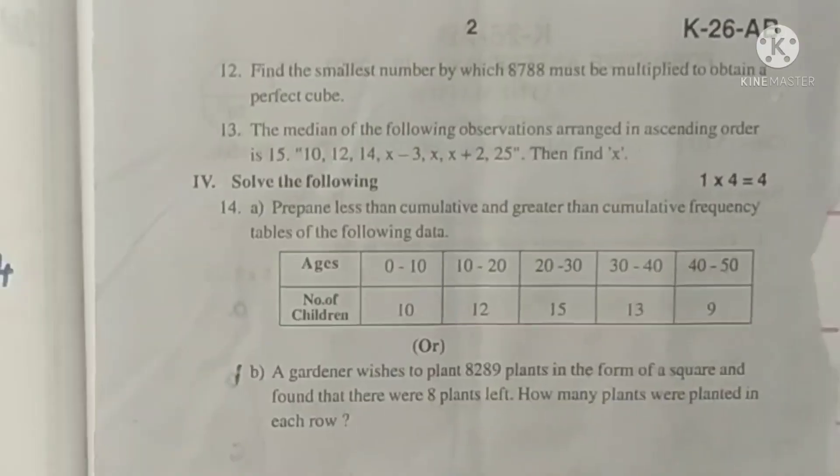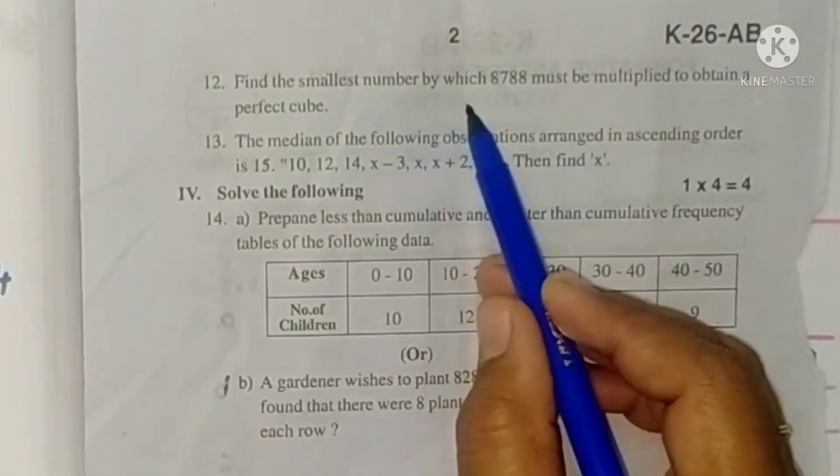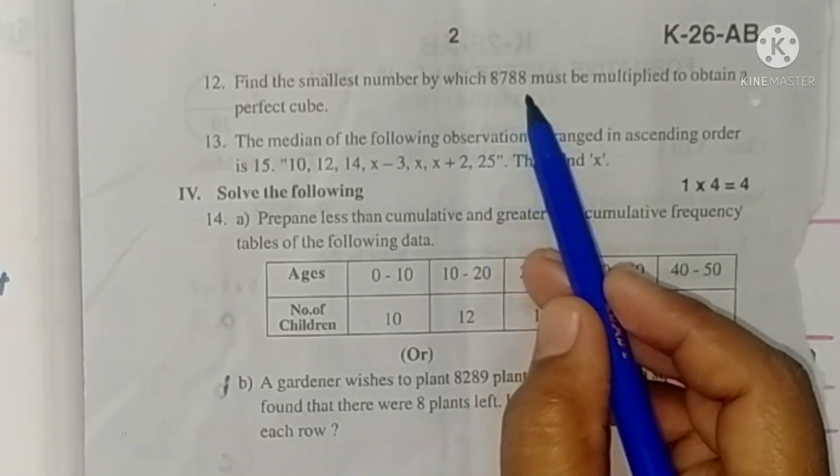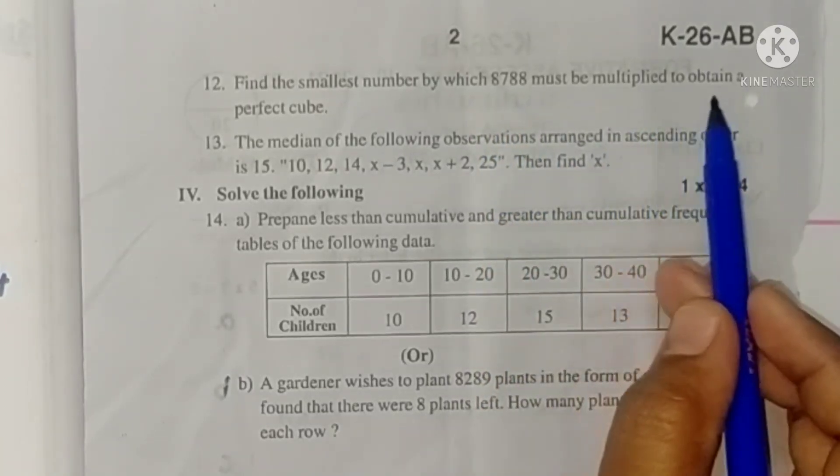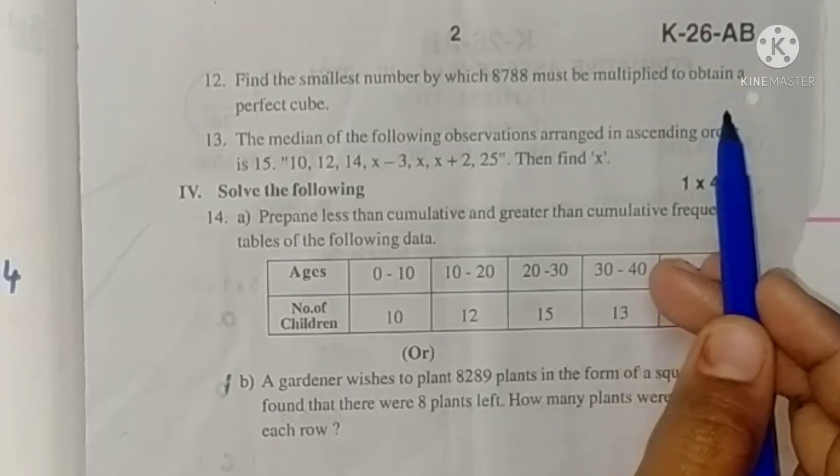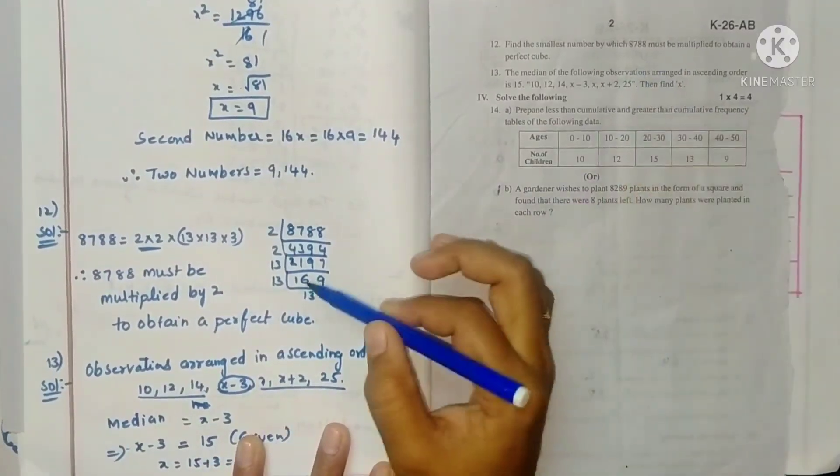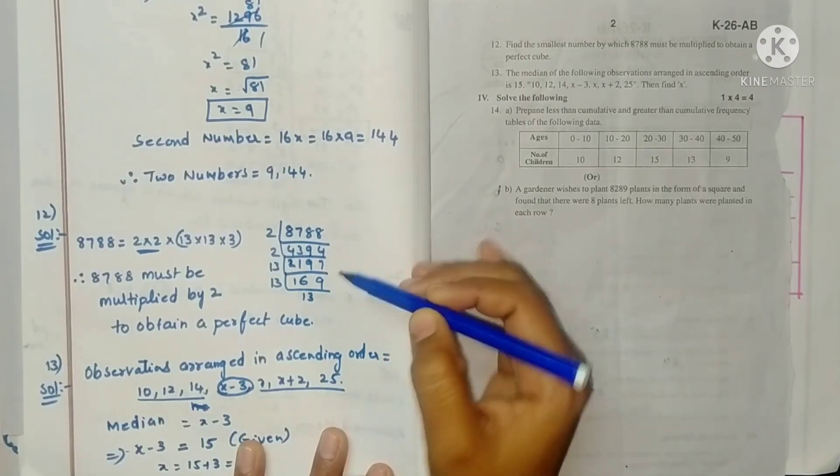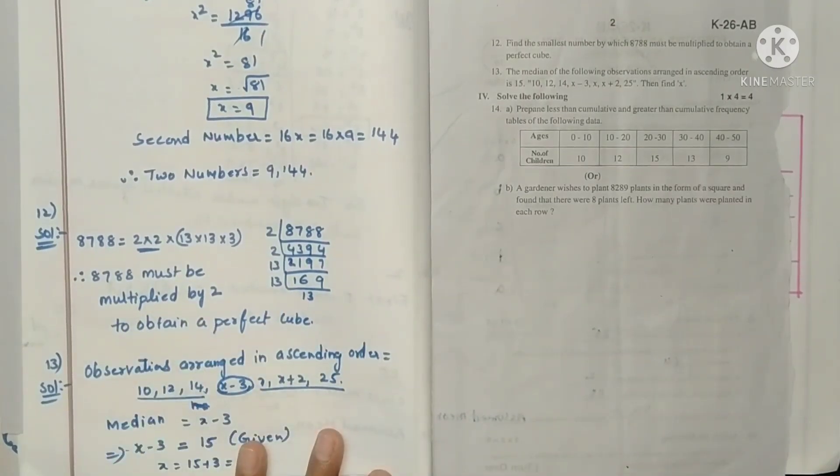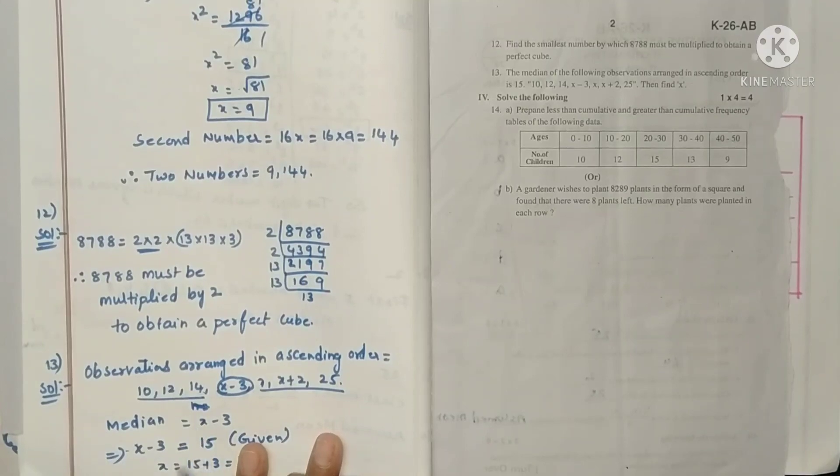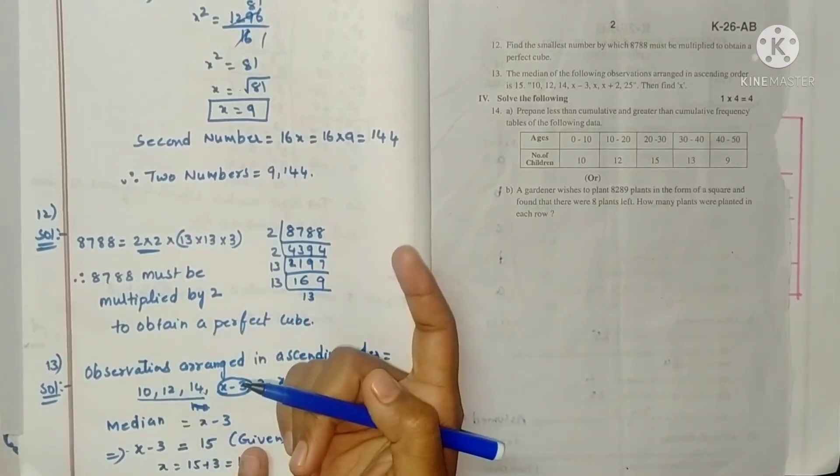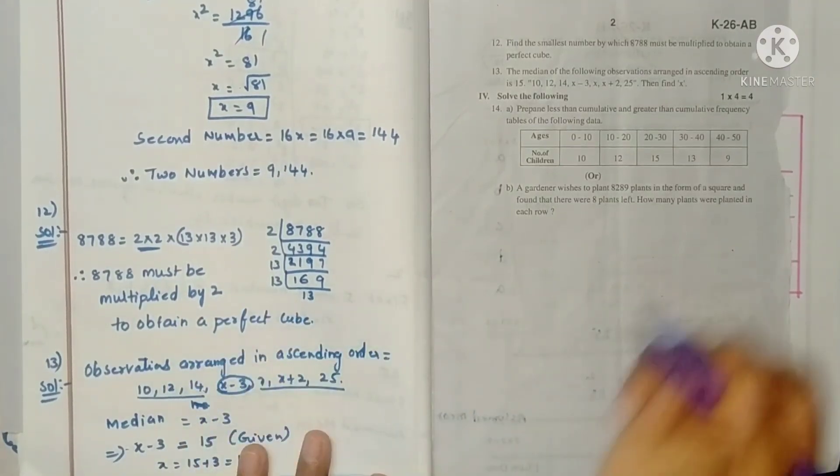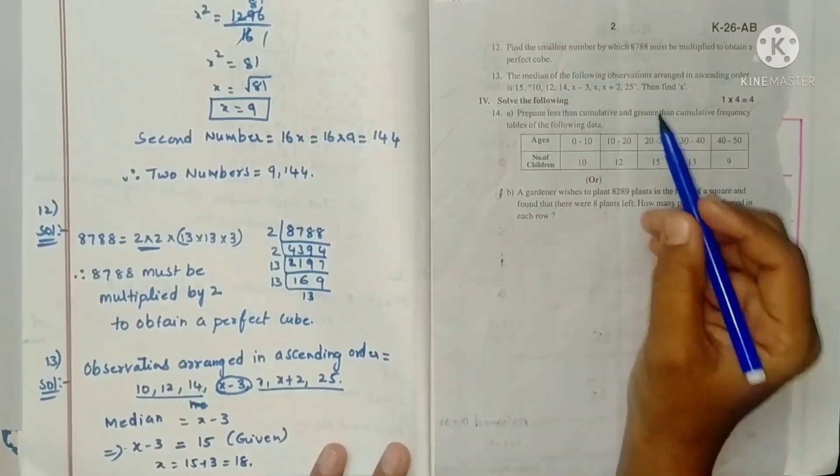Next, twelfth problem. Find the smallest number by which 8788 must be multiplied to obtain a perfect cube. Again, do prime factorization. For cube root of 3, three should be in one set. But 2 is only 2 times. So it should be multiplied with 2.